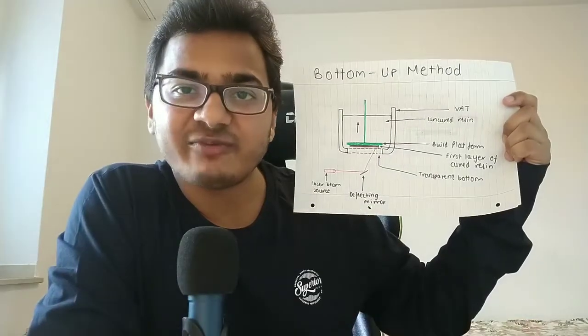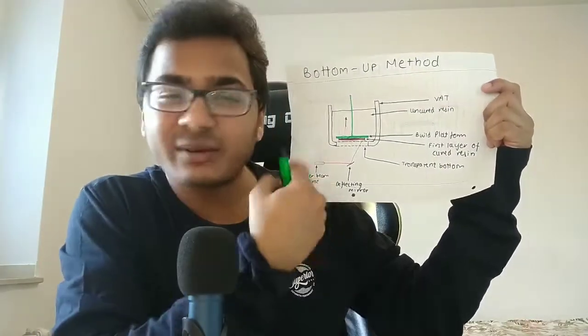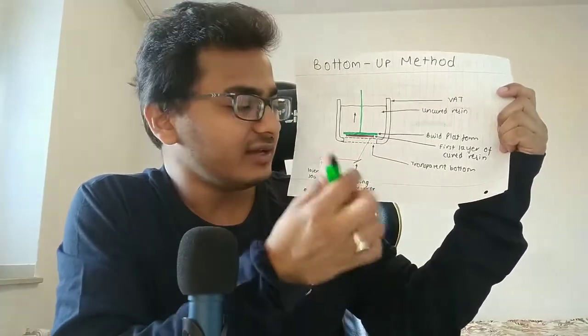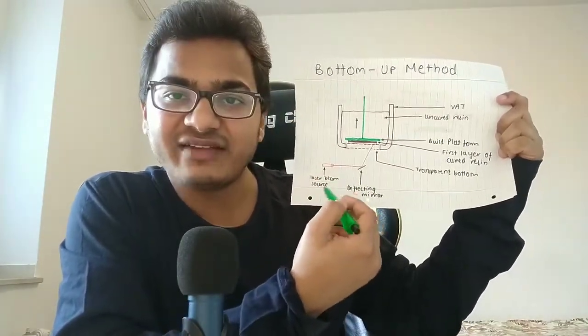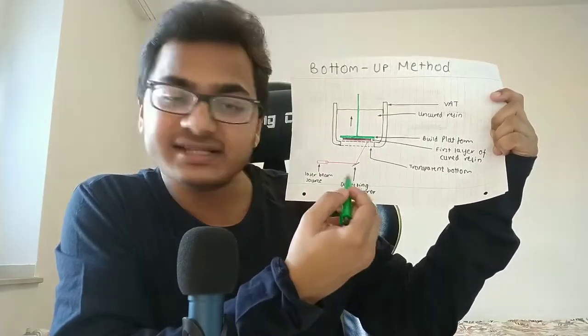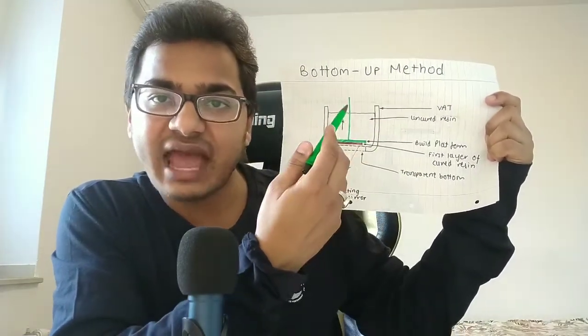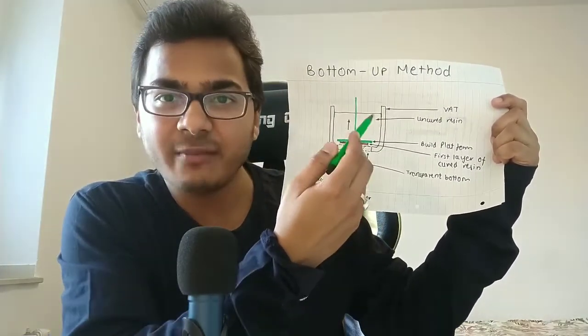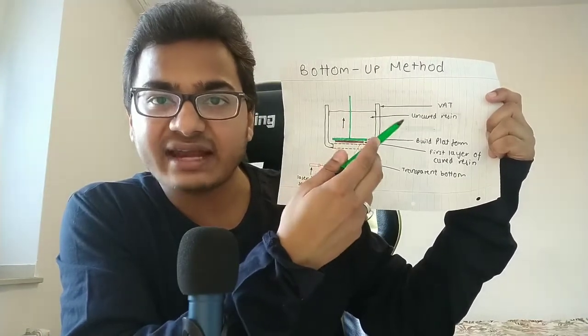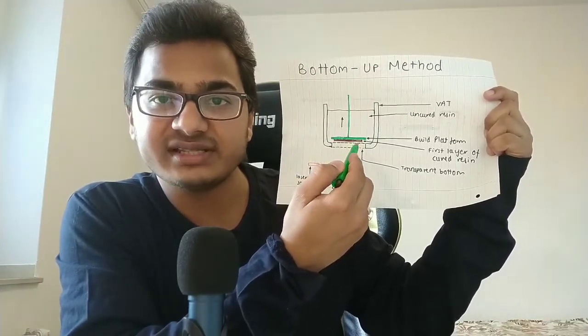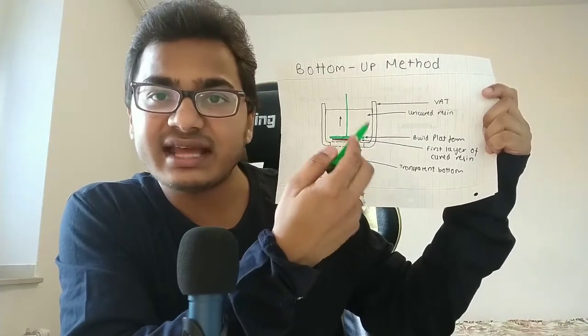Now this is the diagram for the bottom-up method. You can see the components are almost the same, only the setup is slightly different. Again, we have the laser beam source, the deflecting mirror, the green portion which is the build platform, the vat with uncured resin, and the first layer of cured resin shown in brown.